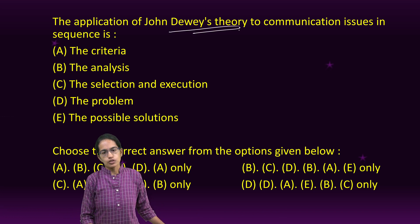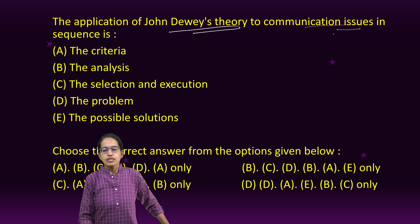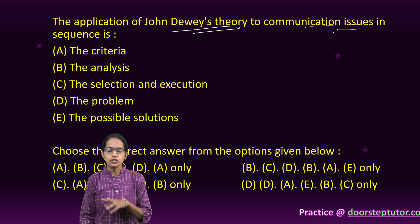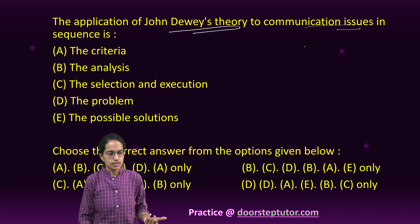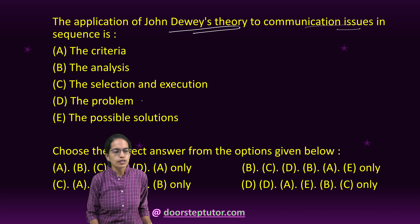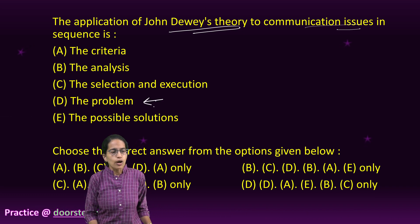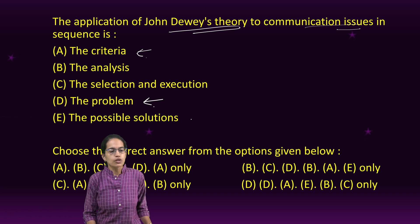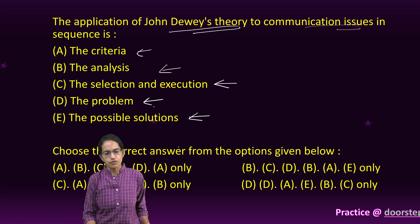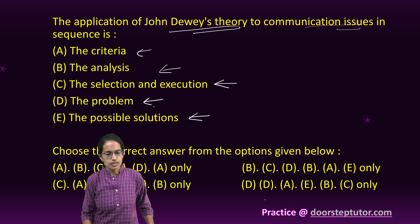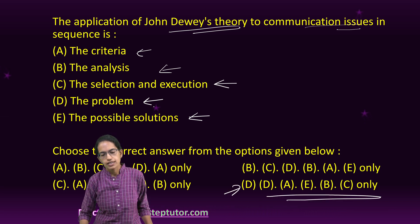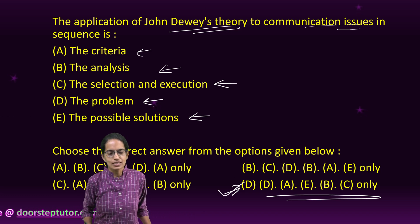John Dewey's theory on communication is interesting. It points out two types of education — traditional and progressive — and how communication is followed in each. First we understand the problem, then we focus on the criteria, then we discuss what solutions can be brought, then the analysis, and finally the execution. So that is the correct sequence, starting with D, making option D the right answer.